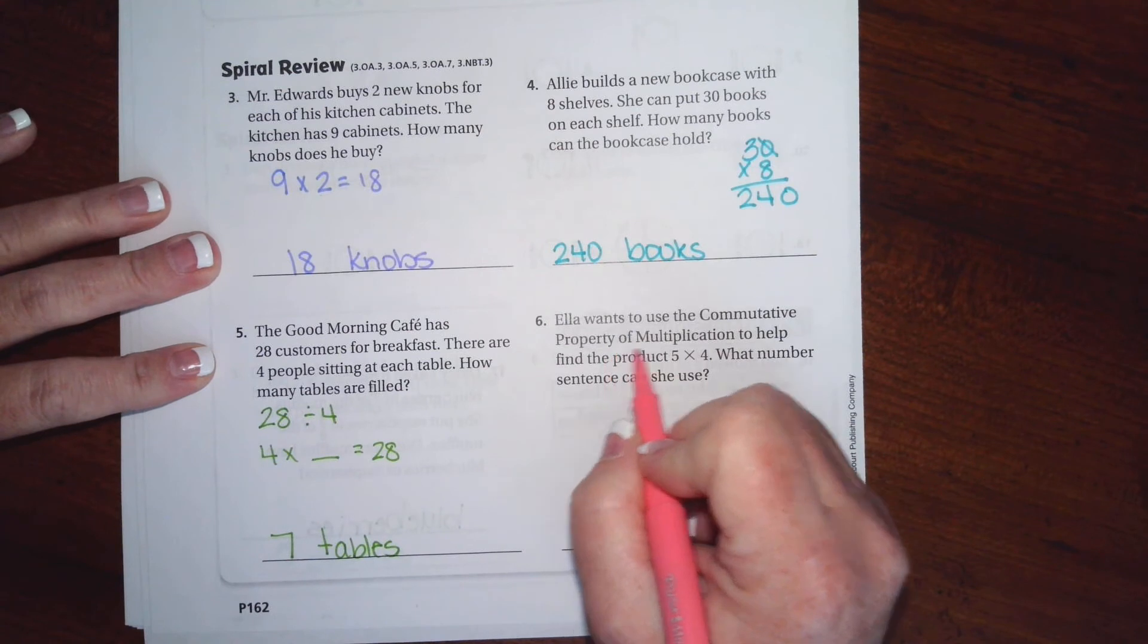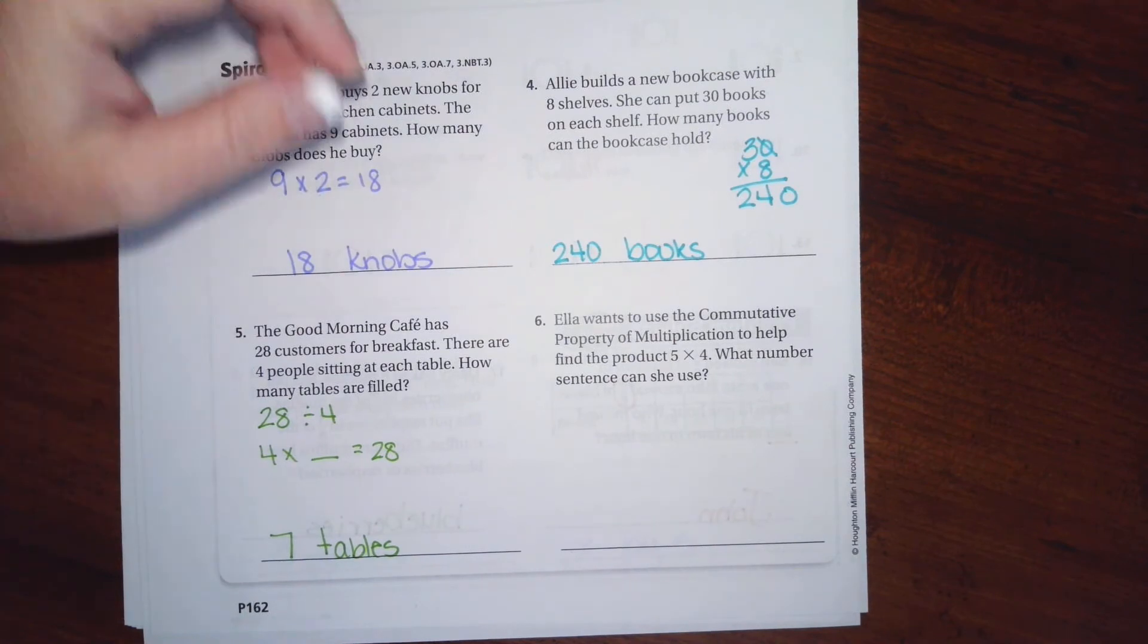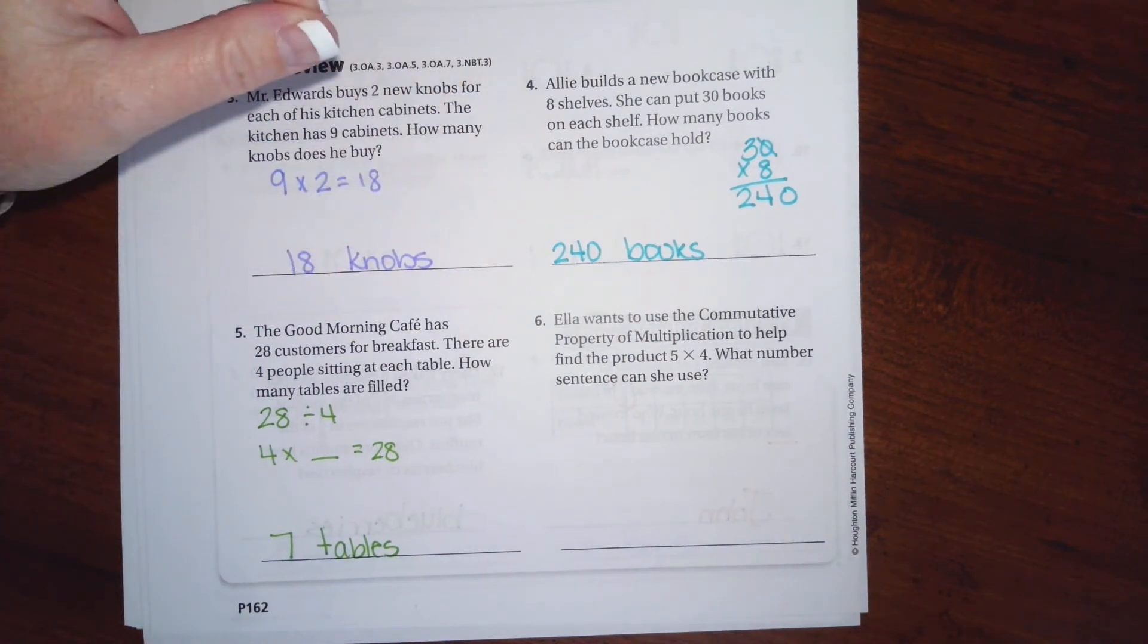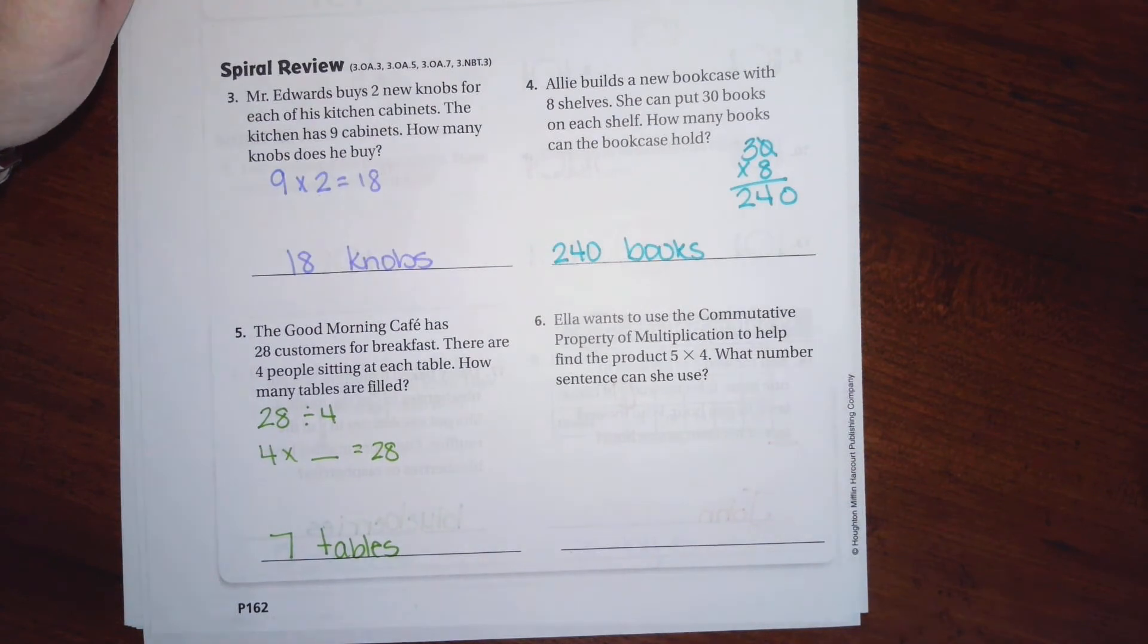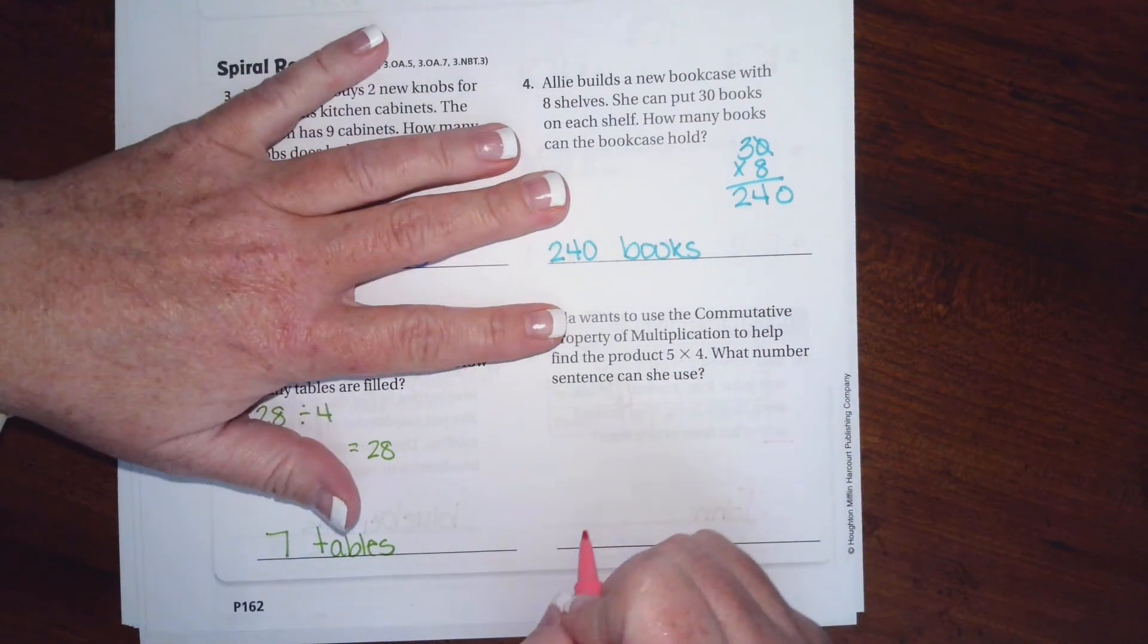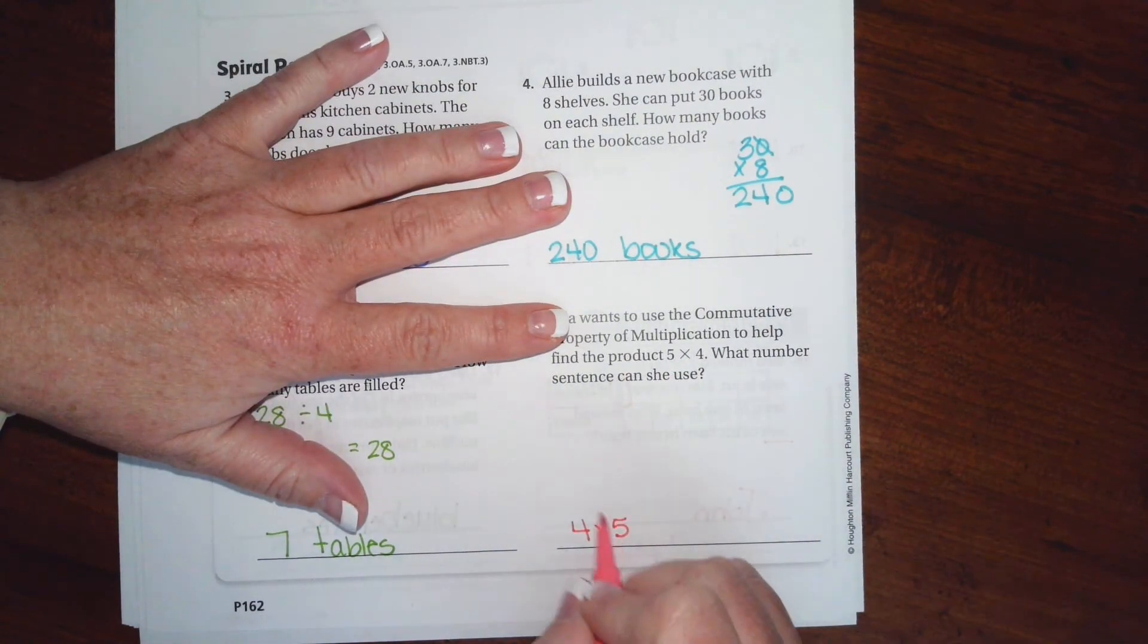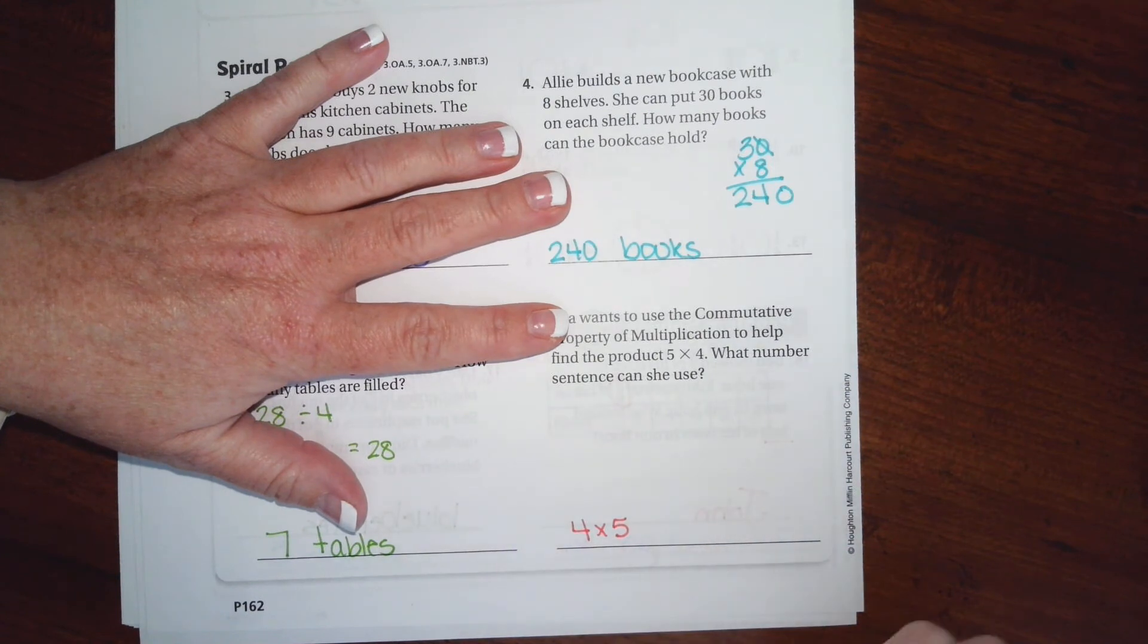Ella wants to use the commutative property of multiplication to help find the product of five times four. What number sentence can she use? Okay, so the commutative property, when you commute you move, so when you commute to work you go from home to work. Okay, that means that all we're doing is we're using the same numbers, we're just changing the order. We are moving the numbers around.